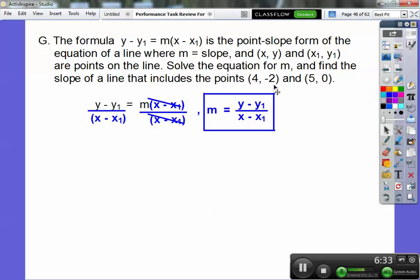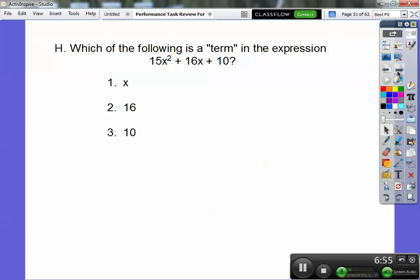It doesn't matter which one you pick to be (x₁, y₁) and (x, y). Just make sure you put the y's on top and x's on bottom. So I did negative 2 minus 0, and then 4 minus 5. I get negative 2 over negative 1, which is positive 2.